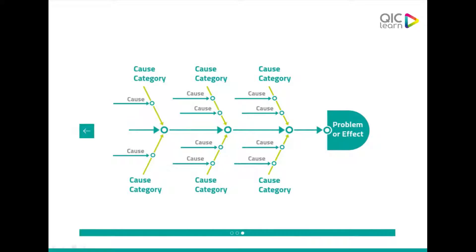The smaller fish bones show all the causes within a category. Most problems we face have more than one cause and some have a large number, so this is a great way to visualize them and acknowledge them all before you choose where to focus your efforts.